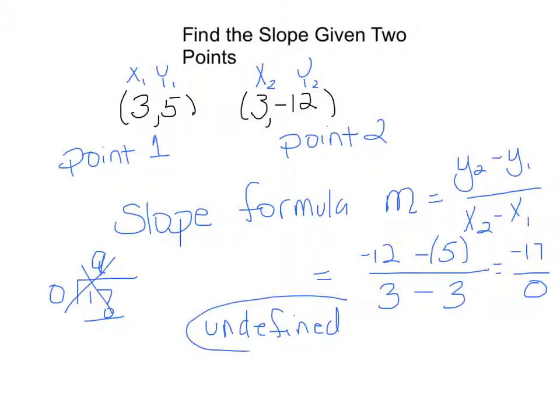And that is the answer to this question. Don't call it zero because a zero slope is much different than an undefined slope. Remember that a zero slope is the line goes horizontal. An undefined slope, the line is vertical.